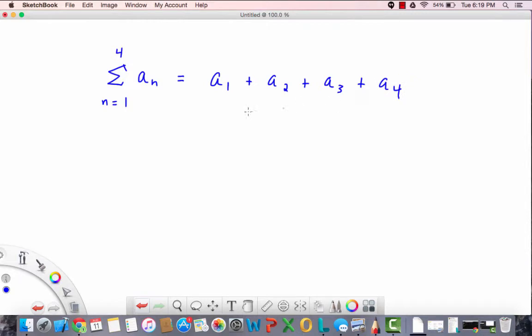How did I get that? What we do is we start when n equals 1. We look down here, that becomes the first term. Then what we do is we add 1 to this starting value. That becomes a 2, so we add a sub 2. Then we keep going, we add another 1, so we get a sub 3, and then we add another 1, so we get an a sub 4. We stop when we get to this number right here.